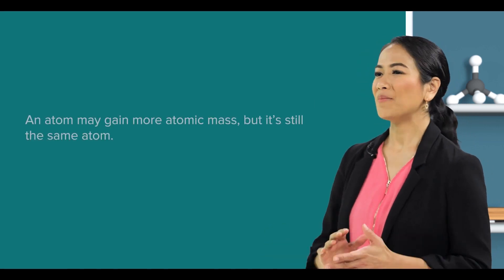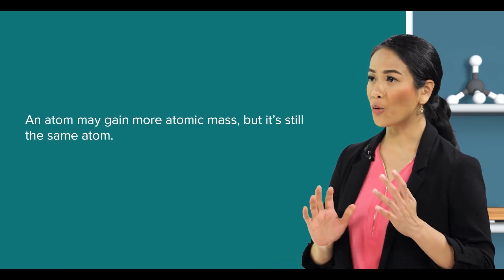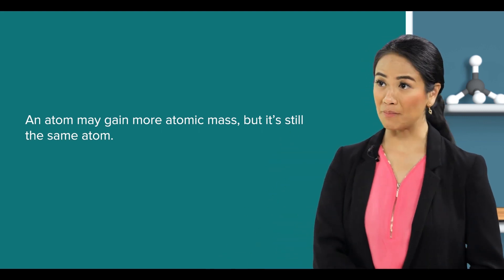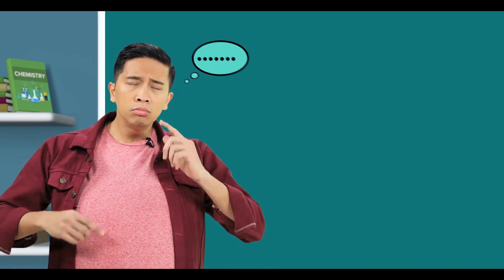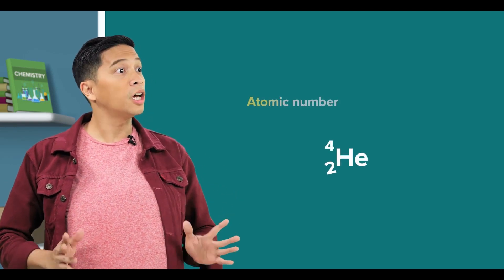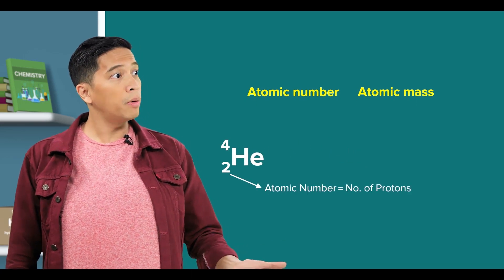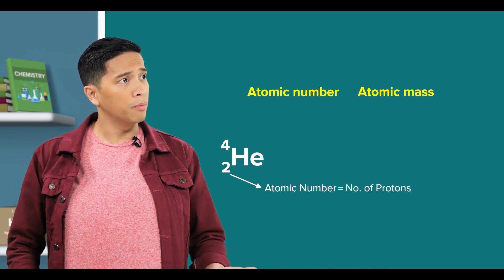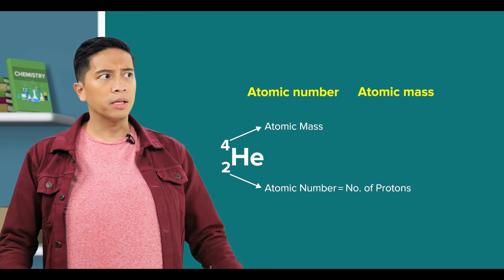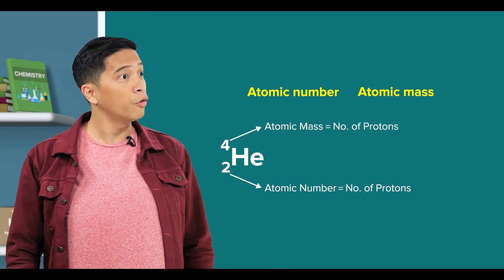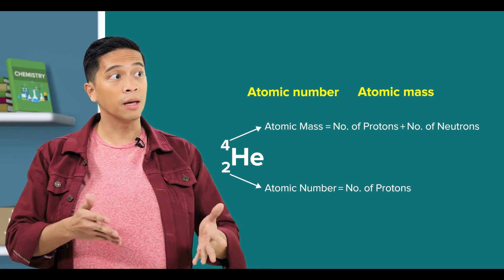Do you know that atoms can gain mass as well? Meaning an atom may gain more atomic mass but it's still the same atom. The atoms of every element have an atomic number and an atomic mass. The atomic number refers to the number of protons in that atom, while the atomic mass refers to the total number of protons and neutrons in that same atom.